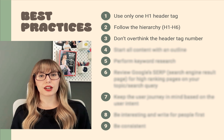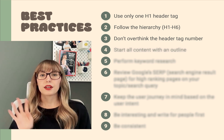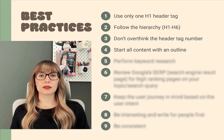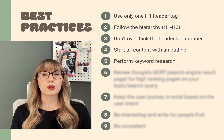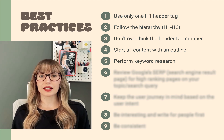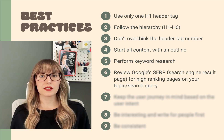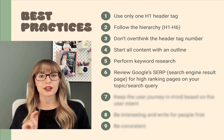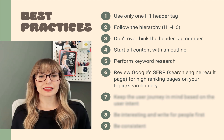Number three: don't overthink the header tag number. Don't worry about using multiple H2s or H3s — what really matters is the structure, not necessarily the heading tag number, as long as it makes sense based on your content. Number four: start all content with an outline to help you organize your headings by primary topic and related subtopics. Number five: perform keyword research — keep your keyword research close by so that your headings are keyword-rich. Number six: review Google search engine result pages for high-ranking pages on your topic, note how they structure their content and what keywords they include in their headings, as following a similar structure can help you rank.